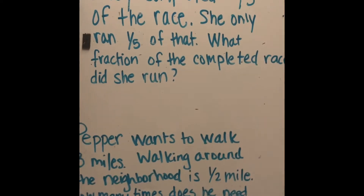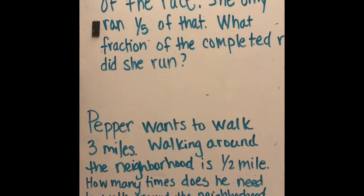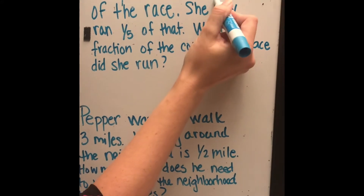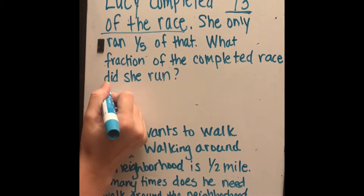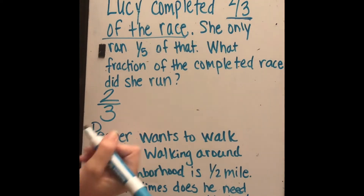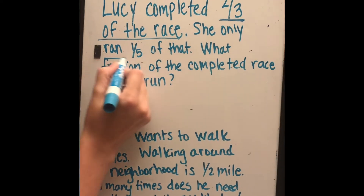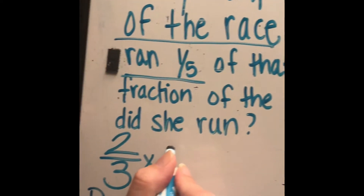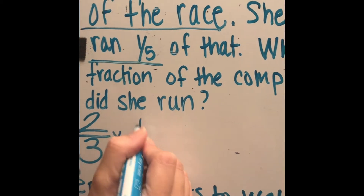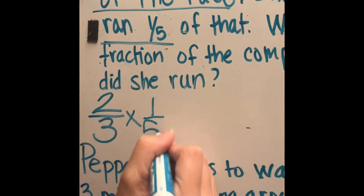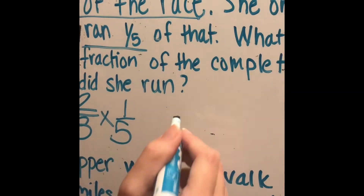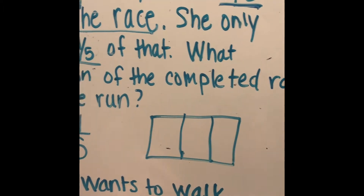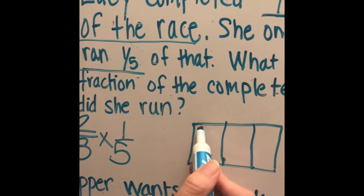Now let's go over the first problem. Lucy completed two-thirds of the race and only ran a fifth of that. What fraction of the completed race did she run? Two-thirds is what she completed, and of that she only ran one-fifth. "Of" is a key word that tells us we need to multiply, so we have two-thirds times one-fifth.